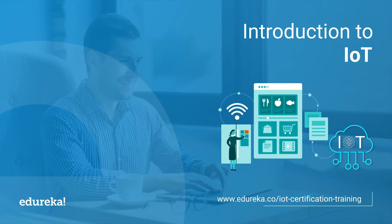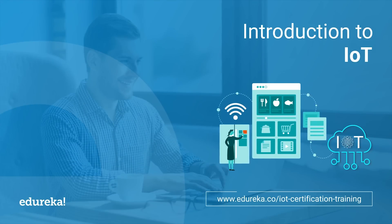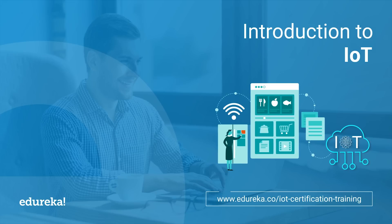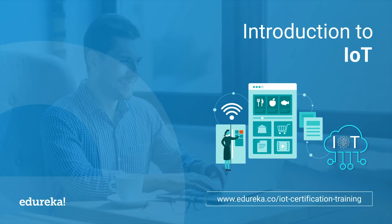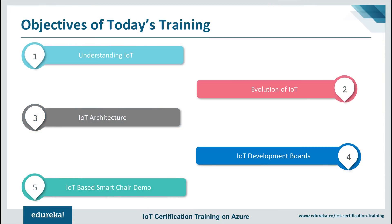Hey guys, this is Bharani from Video Recap. In today's training session we'll understand why the Internet of Things is the next big revolution. We'll start off by understanding what exactly IoT is, then look at the evolution of the internet, followed by IoT architecture, different development boards used for IoT, and finally we'll implement the concept of a smart chair using Raspberry Pi 3.